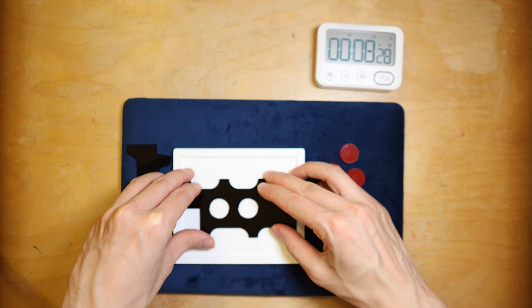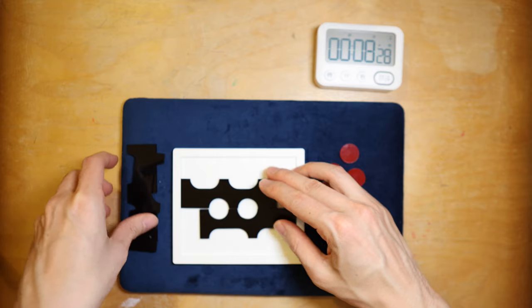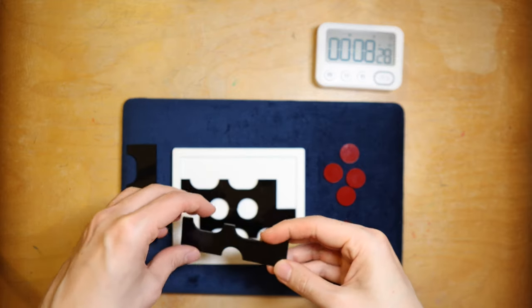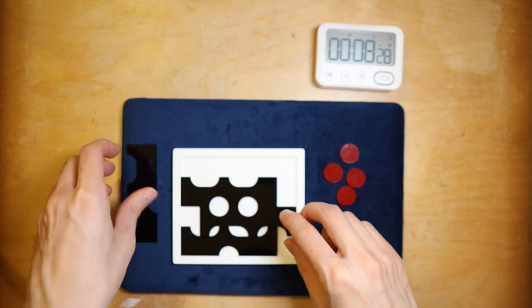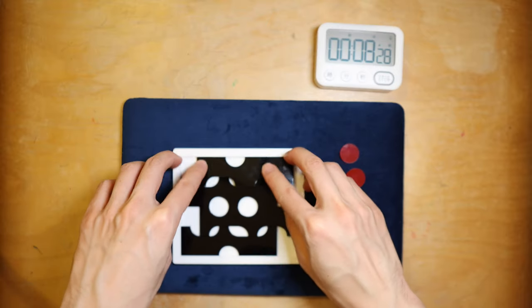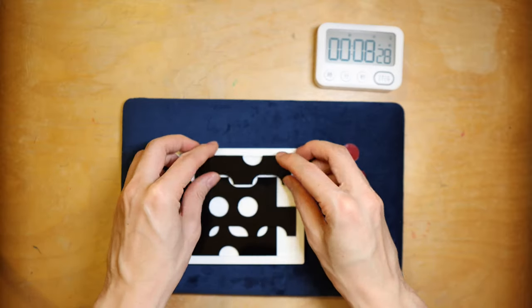The key to solving this one is to make sure the two circular spaces are made within the black pieces like so. Then the other pieces should fall into their own spaces.